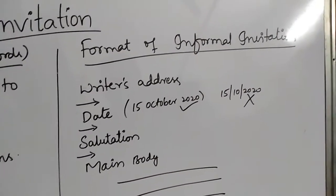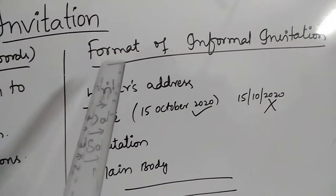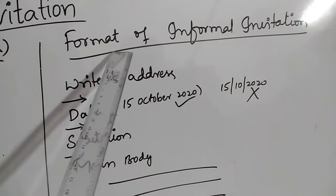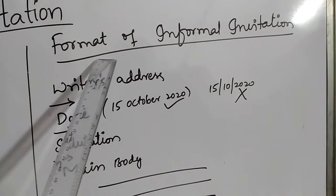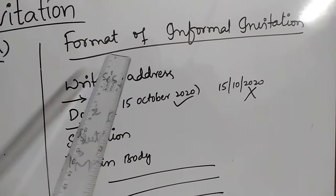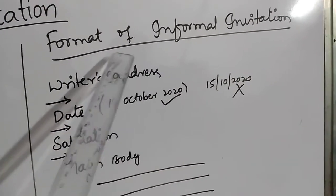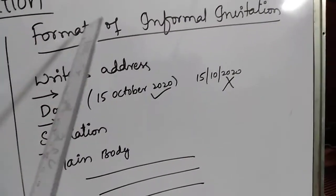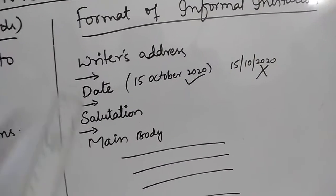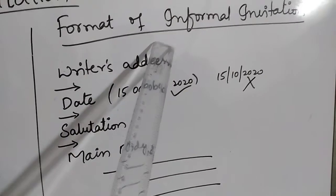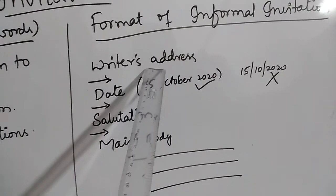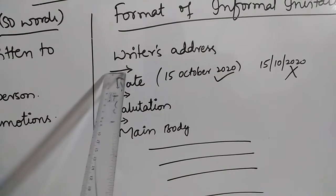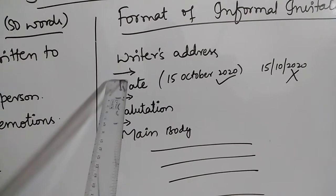In the informal invitation, first we have to write the writer's address. One more thing — please don't write this heading 'format of informal invitation'; that is only for your understanding. Most students are writing this as a heading — please don't. You should write only 'Invitation.' In the format, you have to write the writer's address on the left side of the paper, then leave a space.